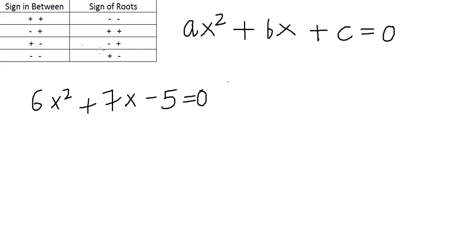One confusion we might have is which root will have a negative sign and which will have a positive sign. In the plus-minus case, the negative sign will be with the root which has a greater modulus value out of the two roots. And in the minus-minus case, the negative sign will be with the root which has a lesser modulus value.